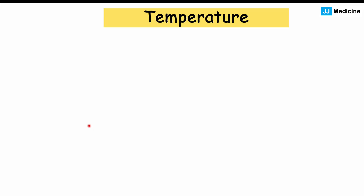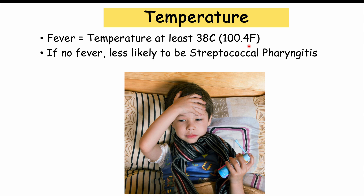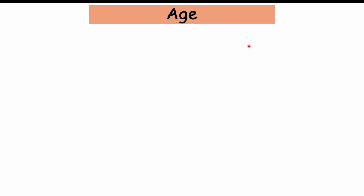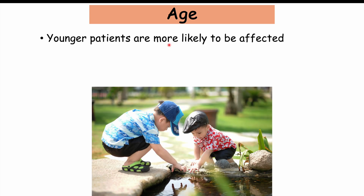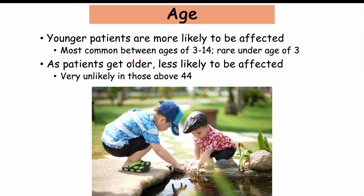Temperature is another important factor. A fever — defined as at least 38 degrees Celsius or 100.4 degrees Fahrenheit — is more likely to occur in strep throat. If there is no fever, it's less likely to be streptococcal pharyngitis. Age is also important: most commonly affected are children between ages 3 and 14. It's rare under age 3, and becomes less and less likely with age, with strep throat being very uncommon after age 44, although it can still occur in some cases.